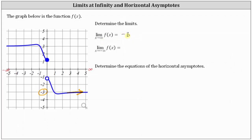Next, we have the limit of f of x as x approaches negative infinity. So now we move left along the graph and see if we're approaching a specific function value. As we move to the left along the graph, we can see we are approaching a y value of positive three. The limit of f of x as x approaches negative infinity equals positive three.